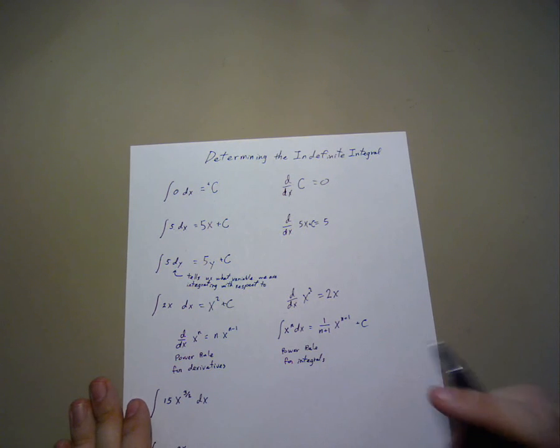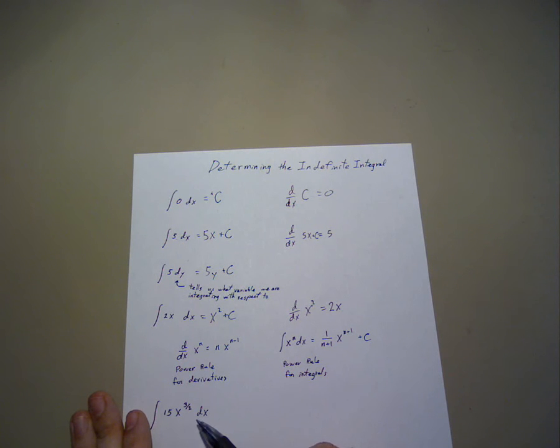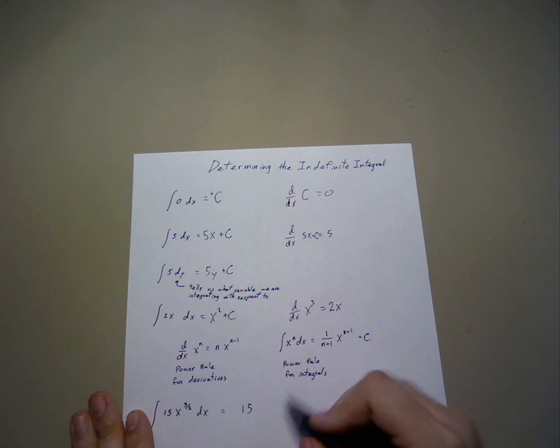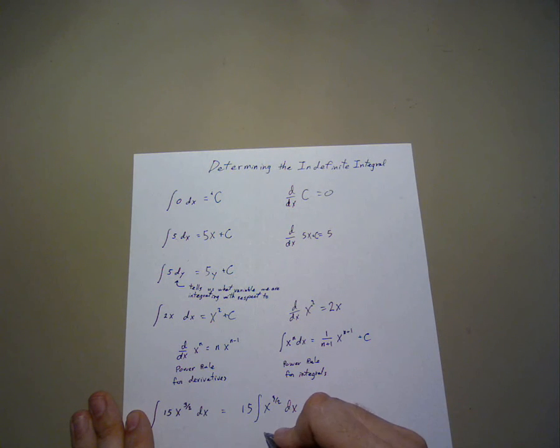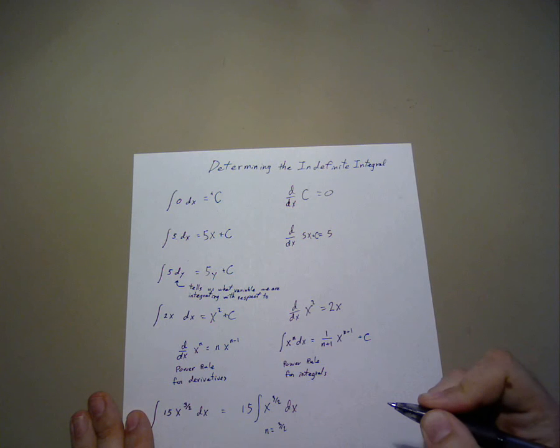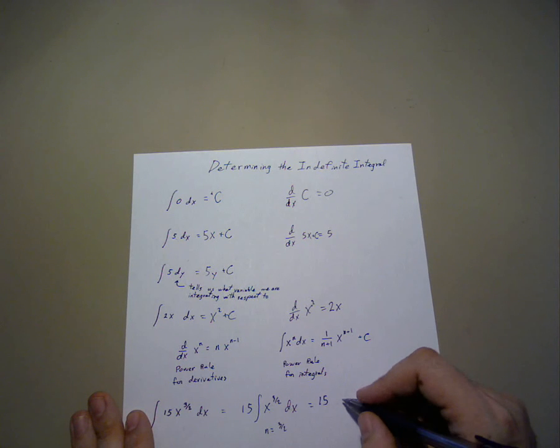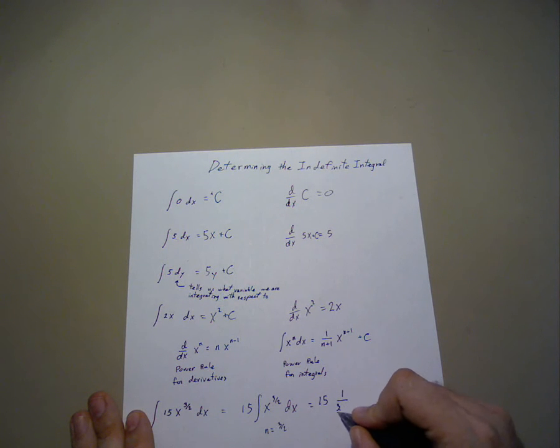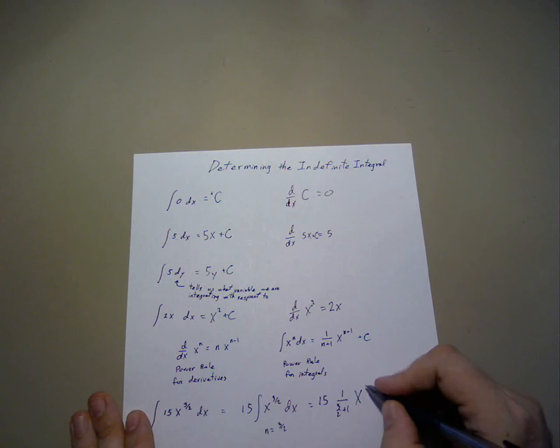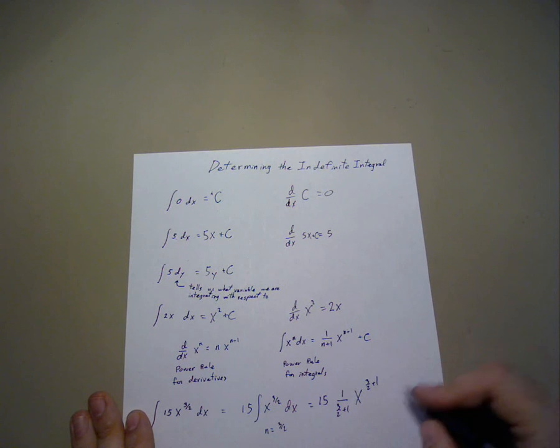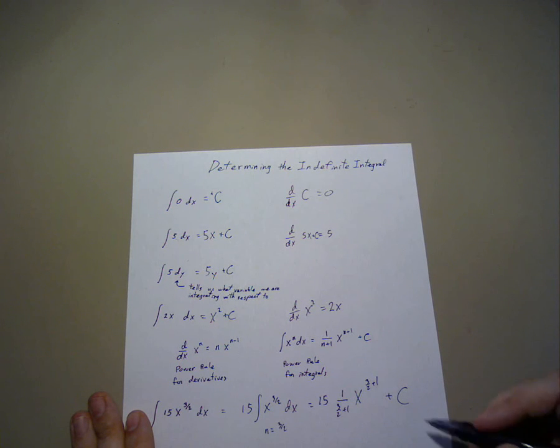So if we apply that to something like 15 times x to the 3 over 2 dx, I'm going to set n equal to 3 over 2. So we get 15 times 1 over n, that's going to be 3 over 2 plus 1, times x to the 3 over 2 plus 1 plus c to the whole affair.